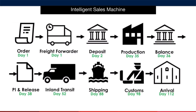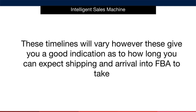Let's look at the sea freight timeline. As you can see, everything is quite similar, except for the fact that the shipping of the items takes quite a bit longer. In fact, the goods will only arrive into the destination by approximately day 88, getting them into customs by approximately day 98. This would then have the items into stock in Amazon by day 112 after being prepped by delivery in the freight hub.